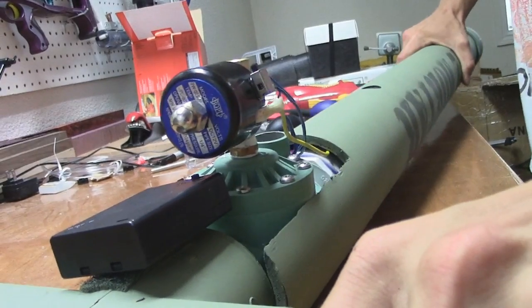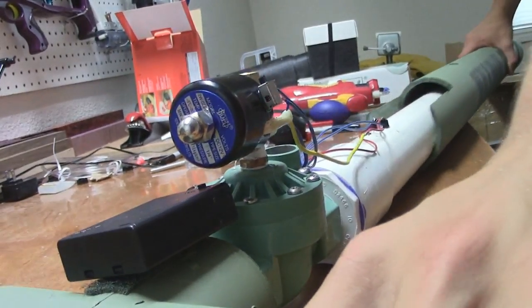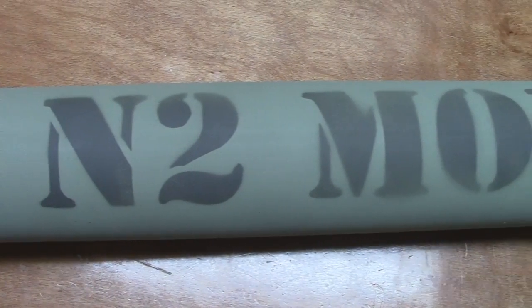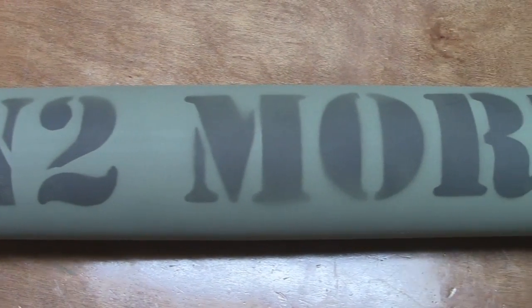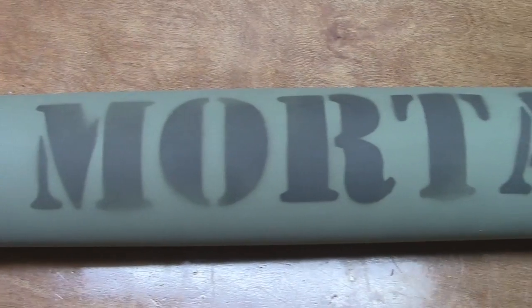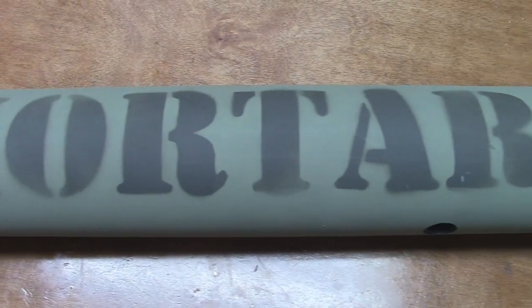To see the mechanism we'll first need to remove the 3 inch PVC sheath. The sheath has N2 mortar stenciled on the side which stands for NERF second attempt mortar and the design was loosely based on the real-life M2 mortar.